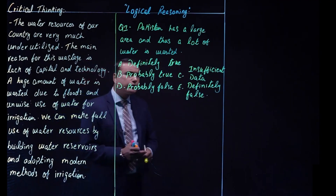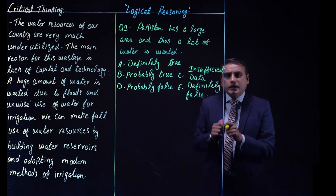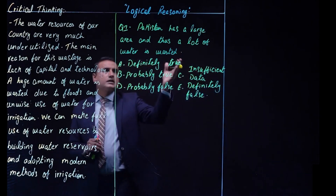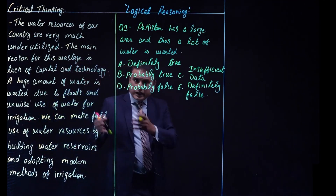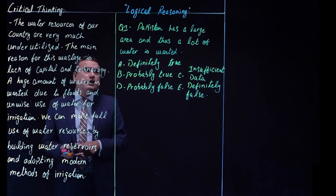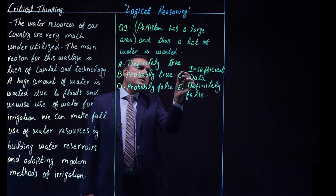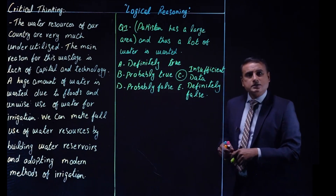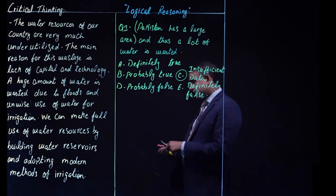If we talk about the statement 'Pakistan has a large area' — it is not mentioned in this passage. We have no clue in this particular passage whether Pakistan has a large area or not. So we cannot evaluate the statement as true or false because no data is given. That is why the right option will be option Charlie — insufficient data.